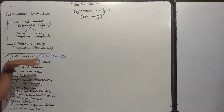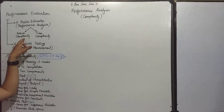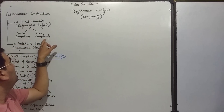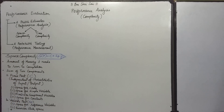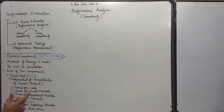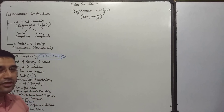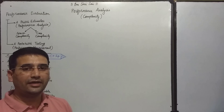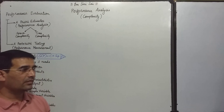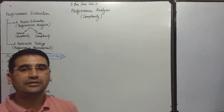In today's class, we will discuss space complexity, and in the next video we will discuss time complexity. Space complexity is the amount of memory an algorithm takes to run to its completion. This can be divided into two parts: the fixed part and the variable part.